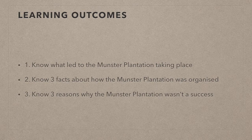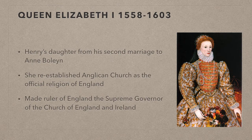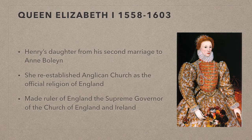We saw in our last video how Queen Mary the First adopted a new policy known as plantation in Laois and Offaly to try to extend English control west of the Pale. Mary's reign as Queen was short as she died in 1558. She was succeeded by her sister Queen Elizabeth the First, a daughter from Henry VIII's second marriage to Anne Boleyn, who had her head chopped off by Henry after being accused of witchcraft among many other things. Elizabeth immediately reversed Mary's religious policy and re-established Protestantism as the official religion of England, once again making the ruler of England the supreme governor or head of the Church of England and Ireland.